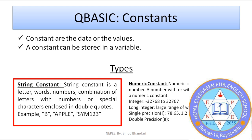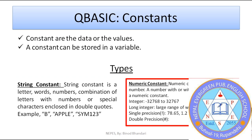Numeric constant refers to numbers. Numeric constants mean a number, and a number with or without a decimal point is a numeric constant. Numeric constants are of different types: integer, long integer, single precision and double precision. Here we can see examples of each type.